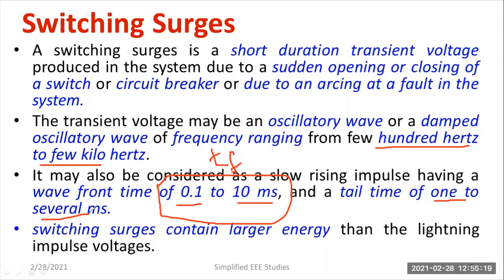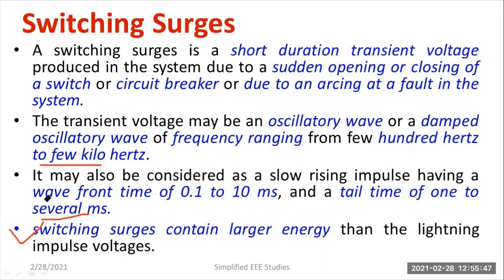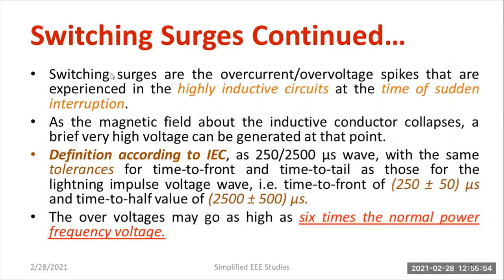Let us define the IEC — International Electrotechnical Commission — standard. I will be displaying that slide so you will understand the IEC definition of switching surges. The wave front time is in the range of 0.1 to 10 milliseconds and the wave tail time varies from one to several milliseconds. It also contains large energy. Now we define based on IEC standard — one of the Electrotechnical Commission power quality standards.